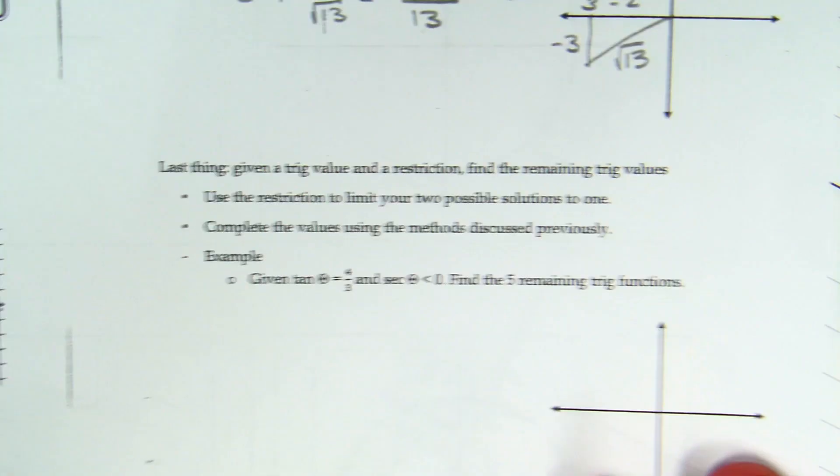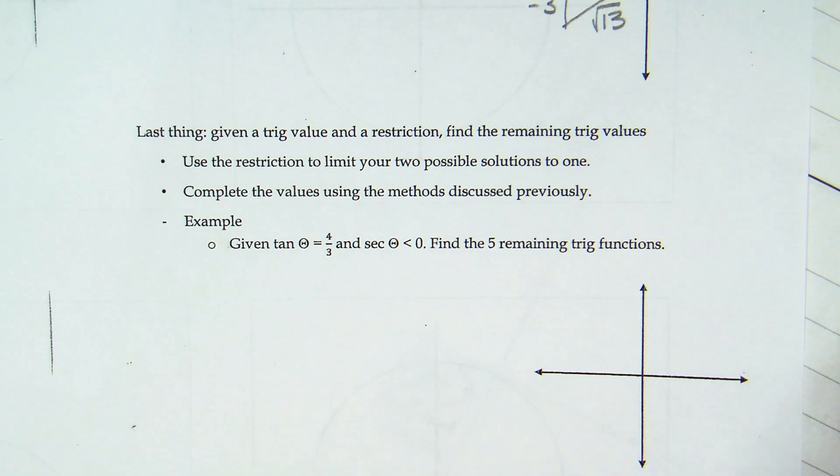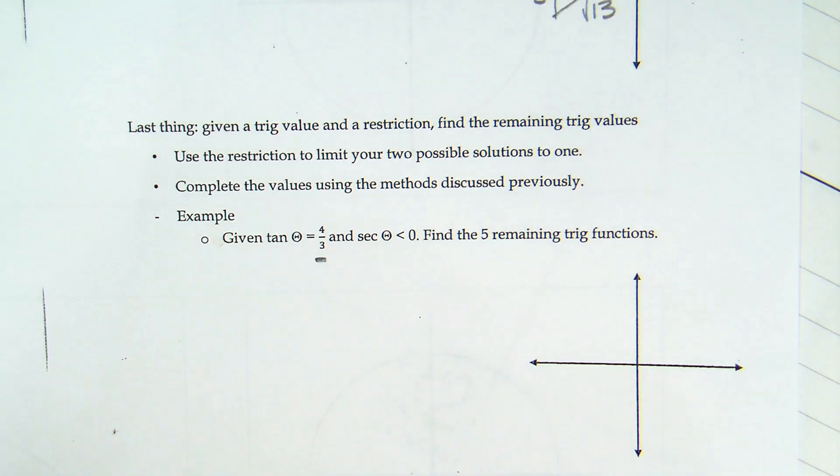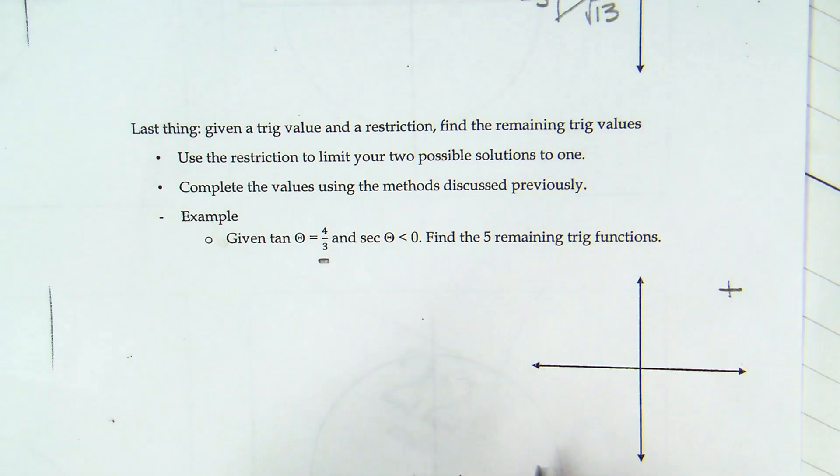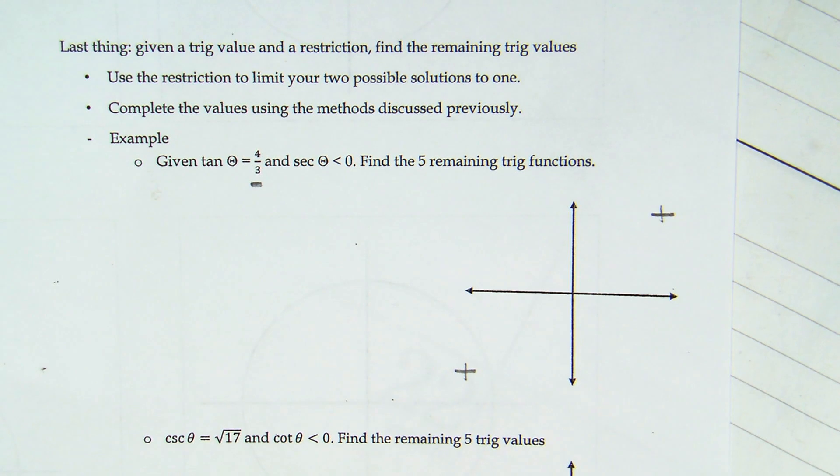Last thing, which is a lie because we have the back, but given a trig value and a restriction, find the remaining trig values. Use the restriction to limit your two possible solutions to one. Complete the values using the method discussed previously. Example: Given tangent theta equals four over three and secant is less than zero. So, the tangent is not only four over three, but is it positive or negative? Positive. So that means it's either there or there. Anything we just did—tangent positive in the first and third.